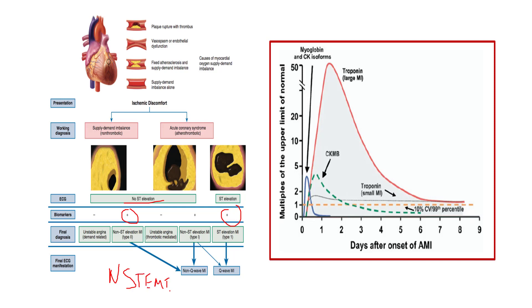If someone comes to the emergency room with chest pain, you'll do a 12-lead to see what's going on and look at those buddy leads for ischemia. If we see some ischemia, we do some blood draws, and if we see spikes in those troponins, we'll send them to the cath lab to have the vessels opened up and explore further.